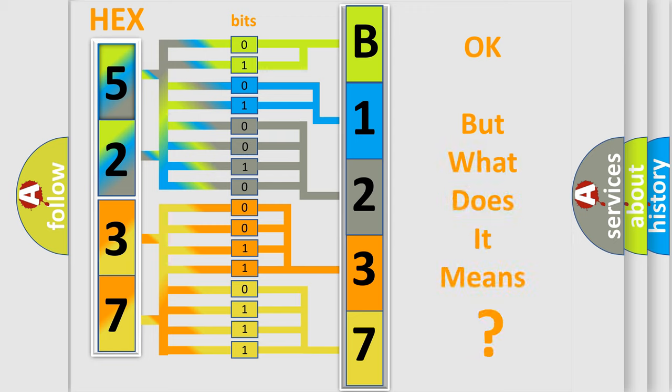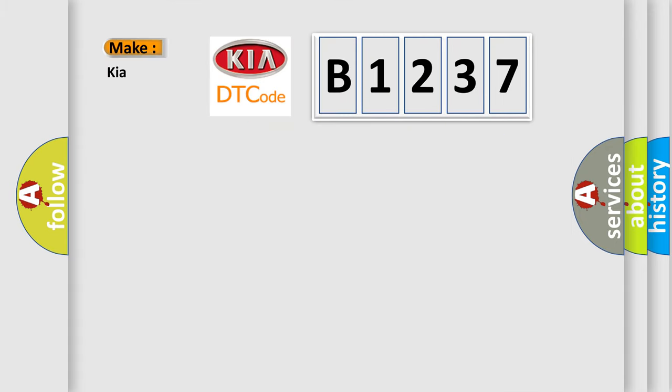The number itself does not make sense to us if we cannot assign information about what it actually expresses. So, what does the diagnostic trouble code B1237 interpret specifically for Kia car manufacturers?